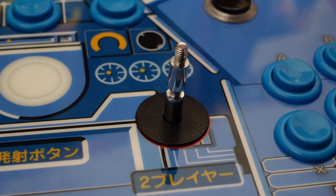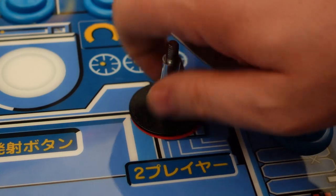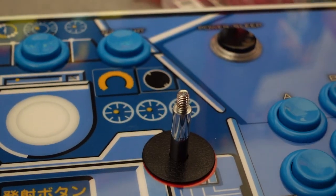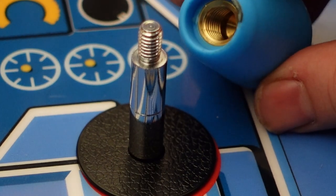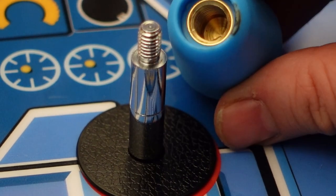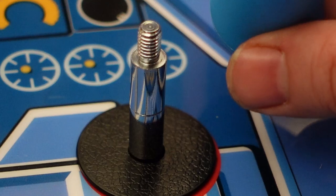So I'm going to use these Sanwa shaft extenders that I got from DIY Retro Arcade. And what's really nice is these just screw right on top of the existing joystick that sticks up from your control panel, adds additional length. I wanted to go with some really nice bat tops on this unit versus cheaping out and just getting something off Amazon.